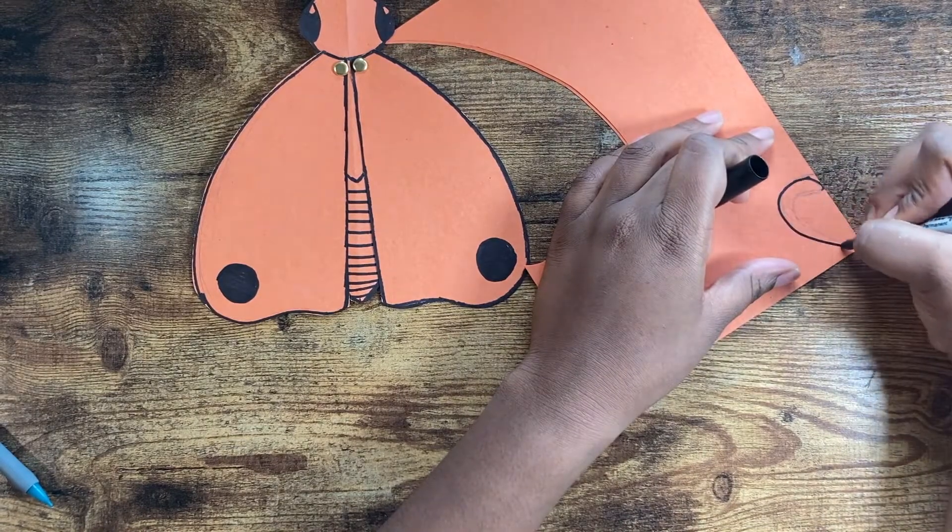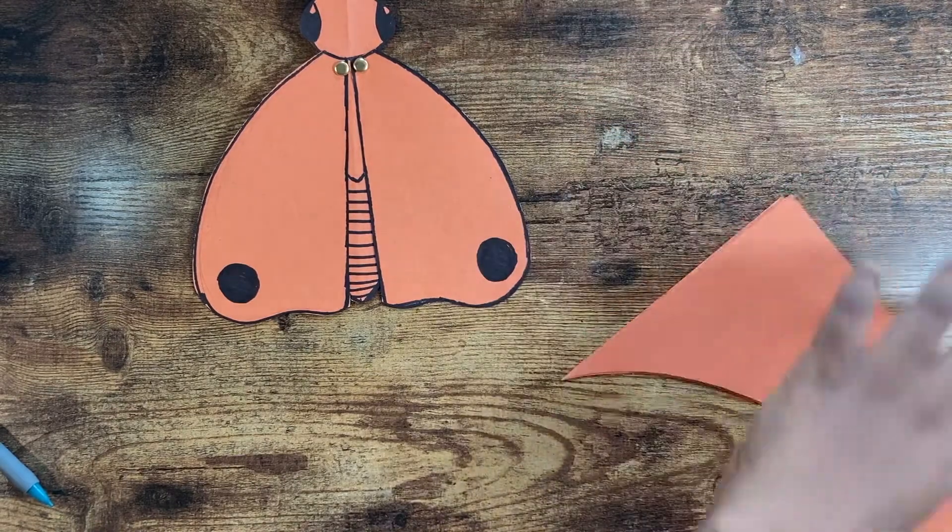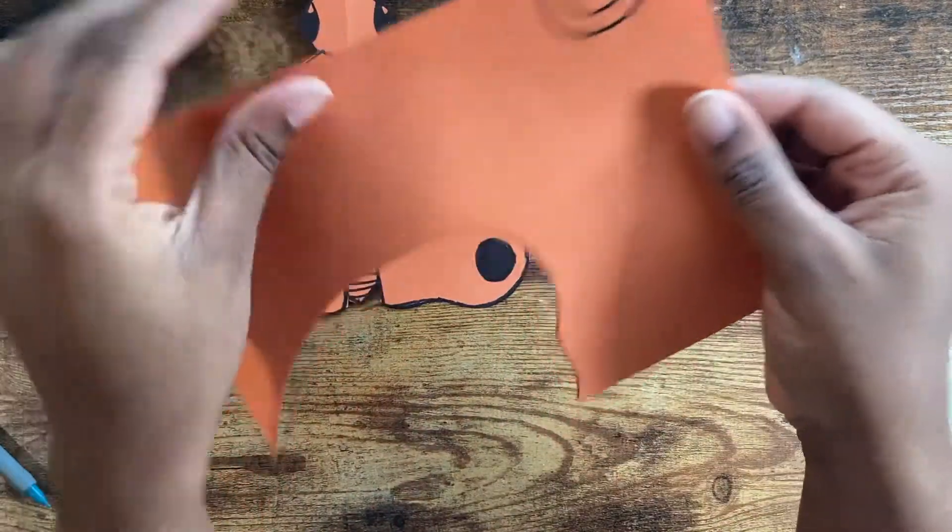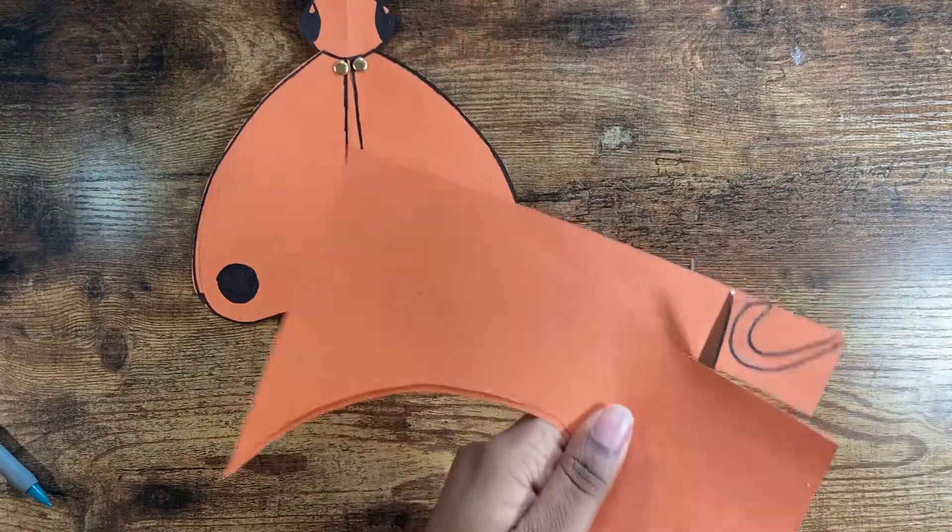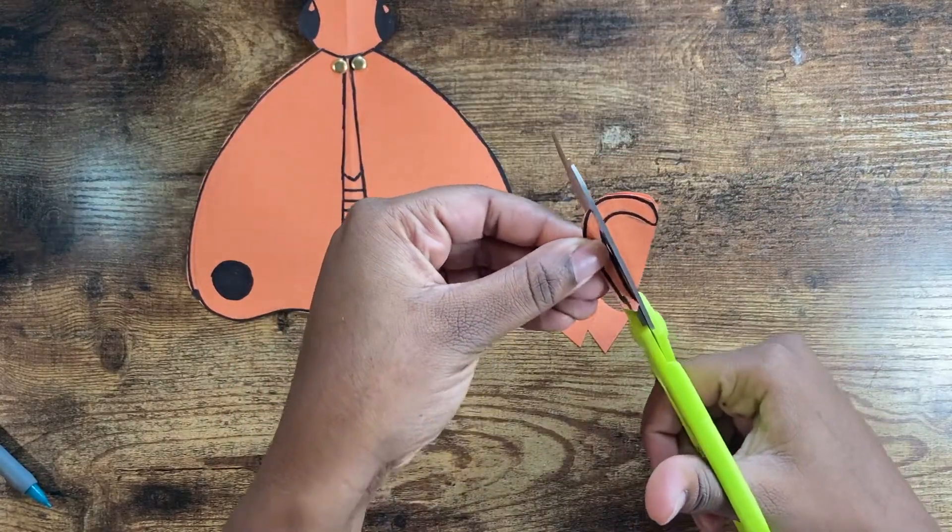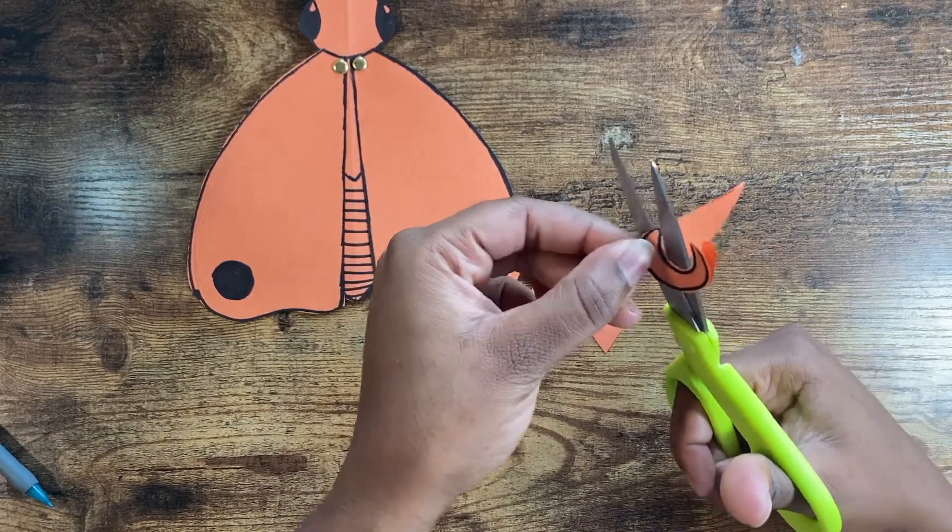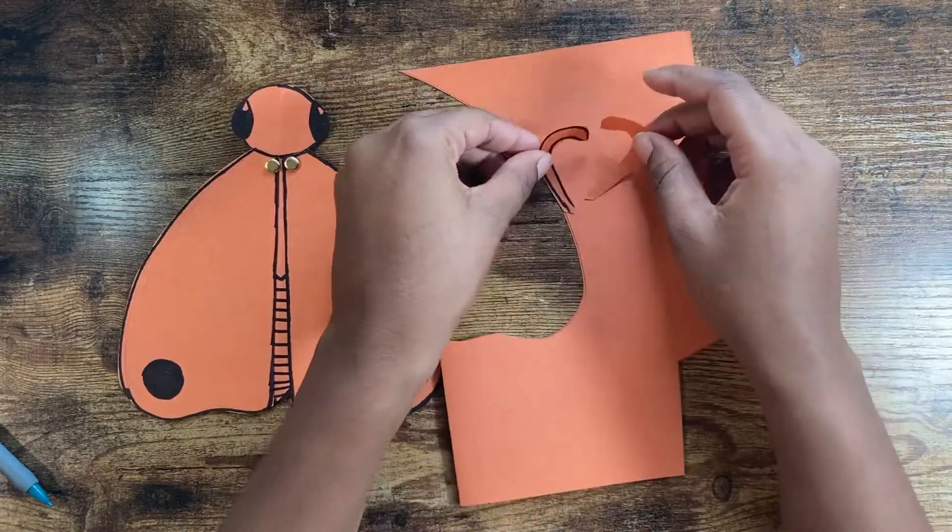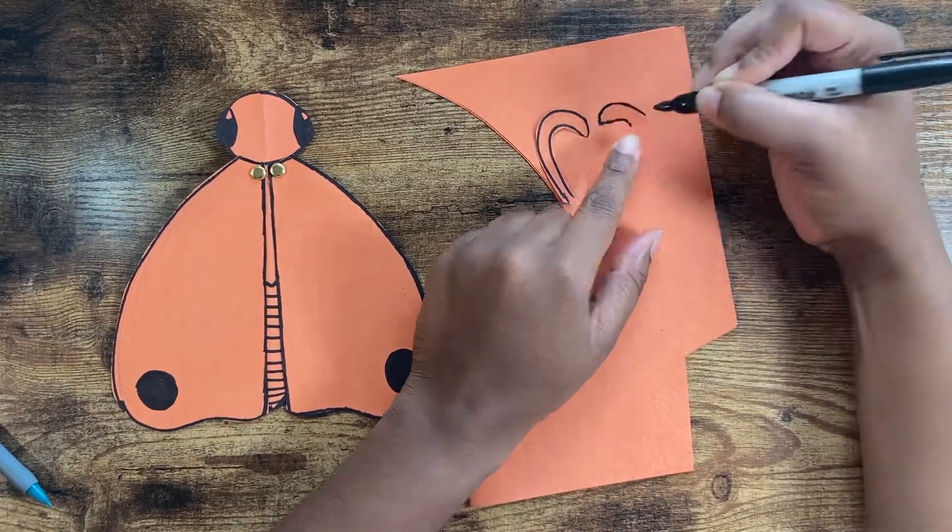And I do have this folded over so that way I can make two of the same size. So now we're just going to get that cut out. All right, now that we got it cut out, let's go ahead and trace the outline so that both of the antennae match.